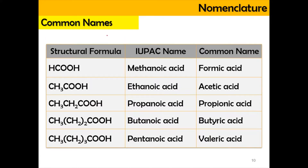Here is the list of carbon names that are popular, and we only need to know for the carbon chain that is less than 5. The common name for methanoic acid is formic acid, which is quite popular, as well as the common name for ethanoic acid, which consists of 2 carbons, is acetic acid.